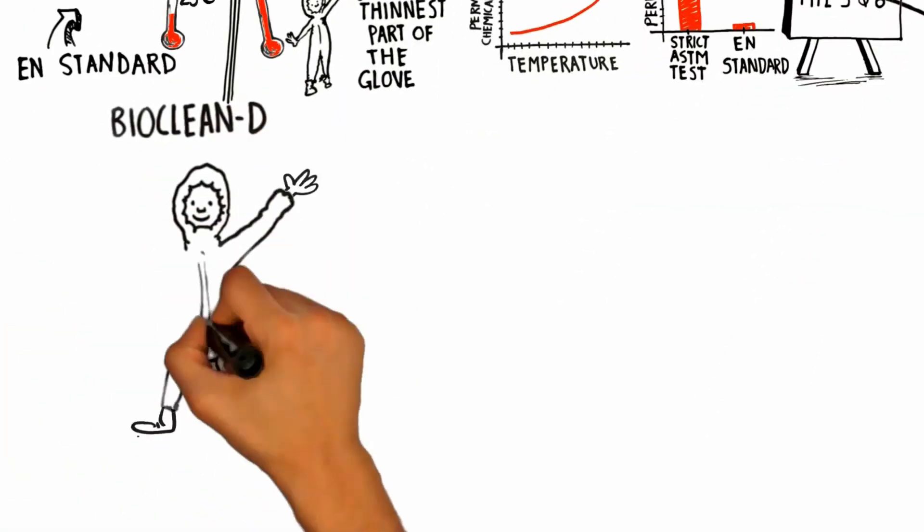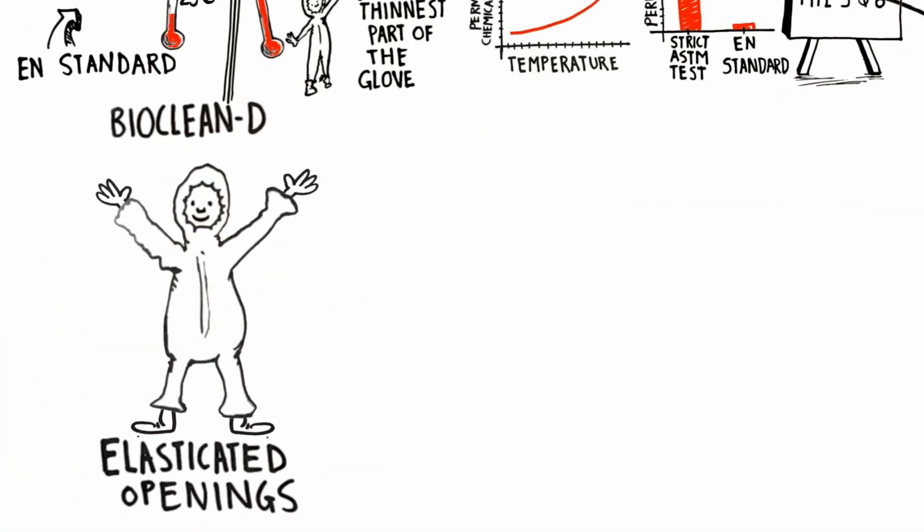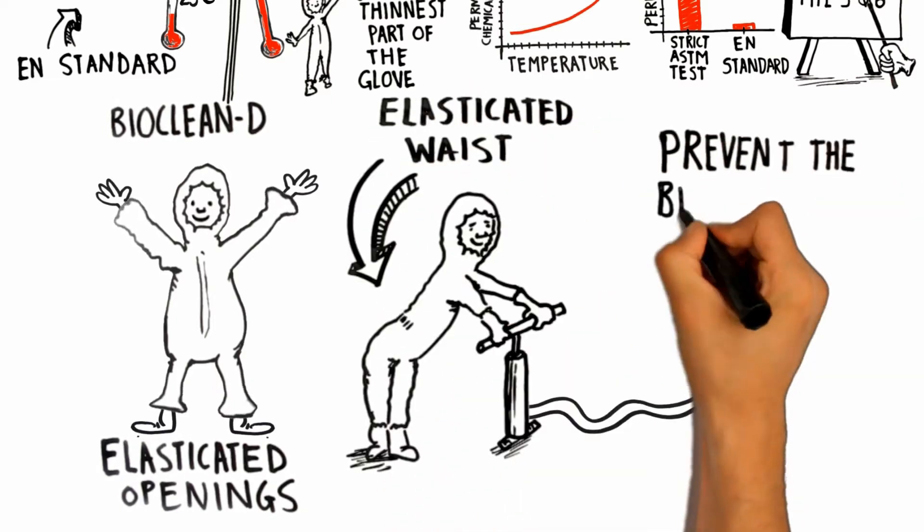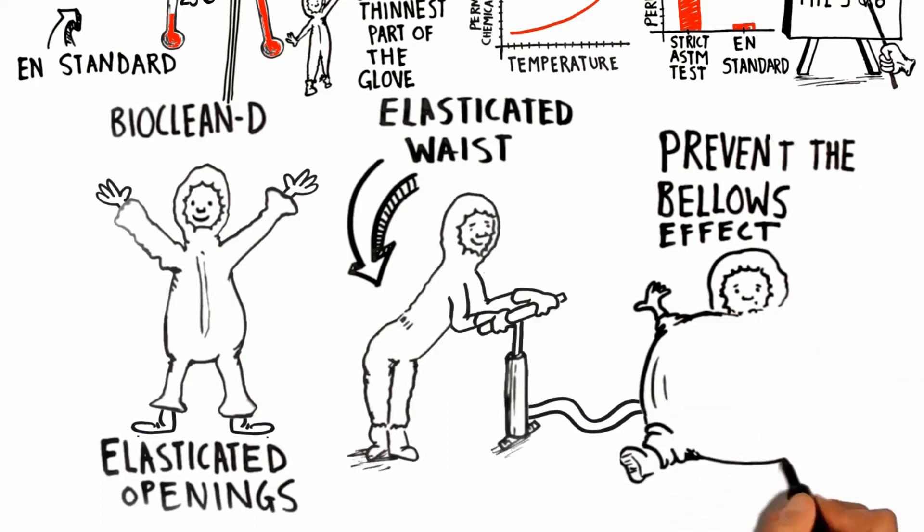BioClean D garments have elasticated openings to restrict particle release. Coveralls also have an elasticated waist to prevent the bellows effect due to pressure build-up.